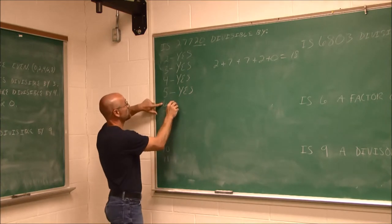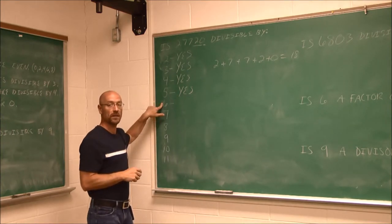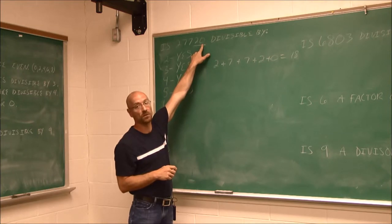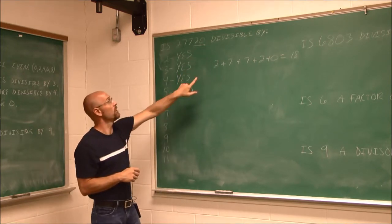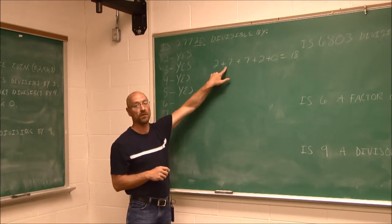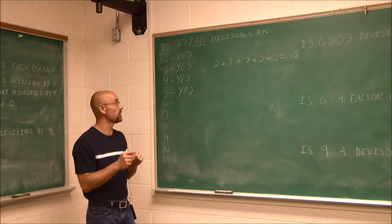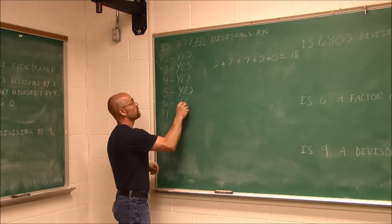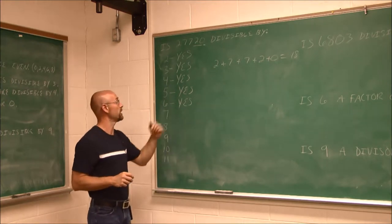Is 27,720 divisible by 6? We've already determined it was divisible by 2 and divisible by 3. Since 2 times 3 is 6 and it follows both rules, the number is divisible by 6.